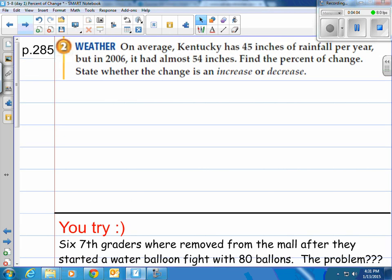How about this example? On average, Kentucky has 45 inches of rainfall per year, but in 2006, it had almost 54 inches. Find the percent of change. State whether the change is an increase or decrease. Here we go. Step one, the amount of change is going to be 54 minus 45, which is nine.